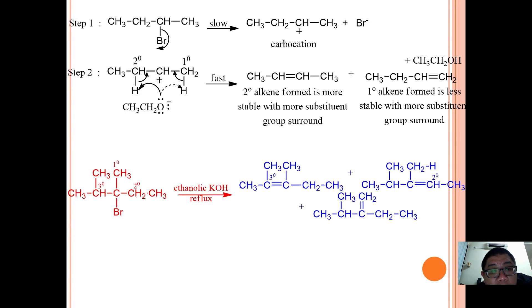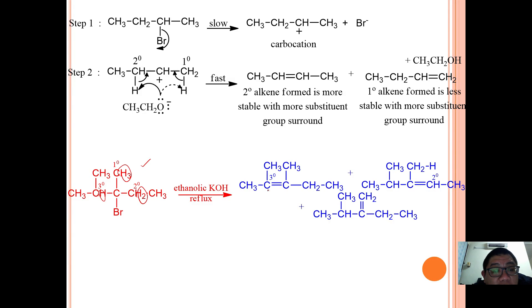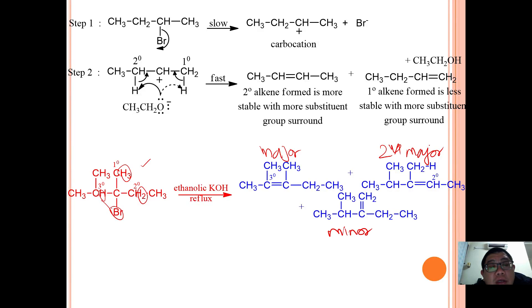For a tertiary haloalkane, there are three possible products. Looking at the example: a tertiary carbon bearing one hydrogen, a secondary carbon bearing two hydrogens, and a primary carbon bearing three hydrogens. The carbon bearing the fewest hydrogens is preferred, so that C-H and C-Br are removed to form the major product. The secondary carbon gives the second major product, and the primary carbon with three hydrogens gives the minor product. This is how Zaitsev's rule applies to elimination of HX in haloalkanes.